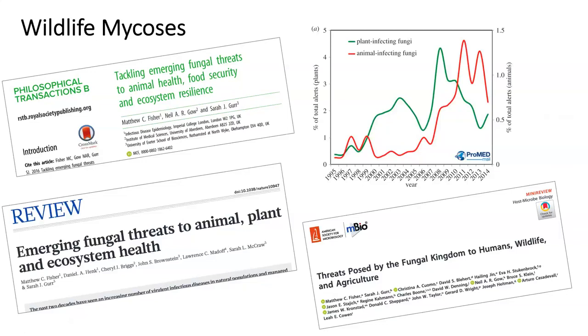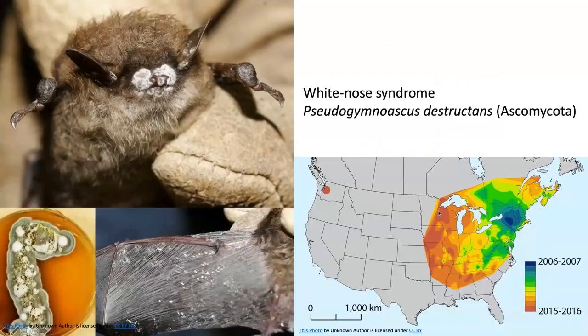When we think about fungal pathogens in wildlife — especially for those more interested in mammals — the most prominent example that comes to mind is probably white nose syndrome in bats, which has seemingly spread across the U.S. from east to west. But in general, fungi are ubiquitous and incredibly understudied.